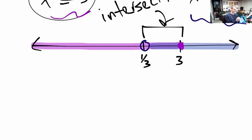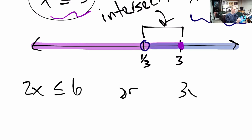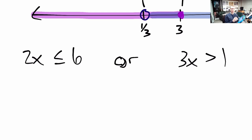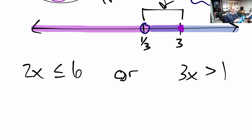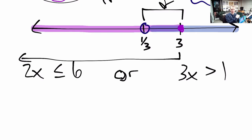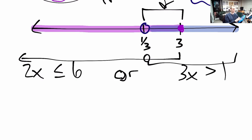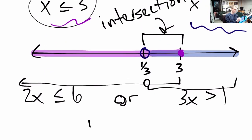If the word 'or' is used instead, you look at the union of the two solution sets. Only one of the two conditions needs to be true. The union in this case would cover nearly all real numbers - any number less than or equal to 3 or greater than 1 third essentially covers almost every real number, which is quite different from the intersection.